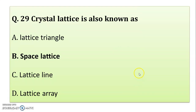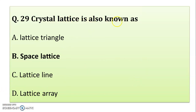Crystal lattice is also known as — space lattice. All other options are there to confuse you: lattice triangle, lattice line, lattice array — all wrong. Crystal lattice is a three-dimensional structure and is also known as space lattice.